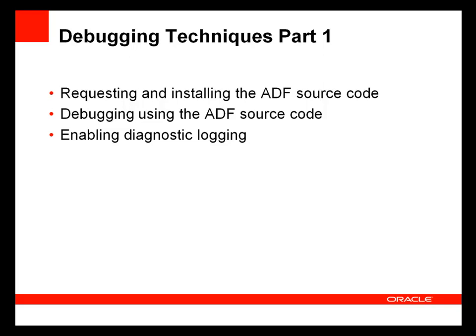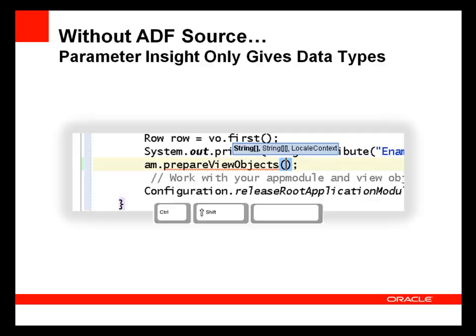The ADF source code is available for customers that have a current support contract. It is not open source, but available source code provided expressly for the purposes of debugging. Without the ADF source code installed, debugging and coding are limited. For example, parameter insight, which is accessed using Control+Shift+Space, only shows data types for an ADF method if the ADF source is not installed.